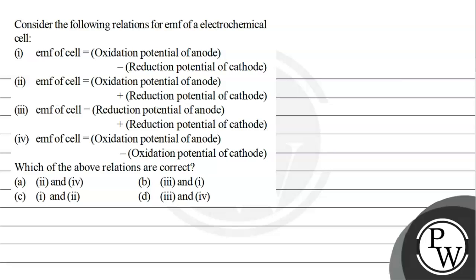Let's read this question. The question says: consider the following relations for EMF of electrochemical cell. Statement 1: EMF of cell equals oxidation potential of anode minus reduction potential of cathode. Statement 2: EMF of cell equals oxidation potential of anode plus reduction potential of cathode. Statement 3: EMF of cell equals reduction potential of anode plus reduction potential of cathode. Statement 4: EMF of cell equals oxidation potential of anode minus oxidation potential of cathode. Which of the above relations are correct?